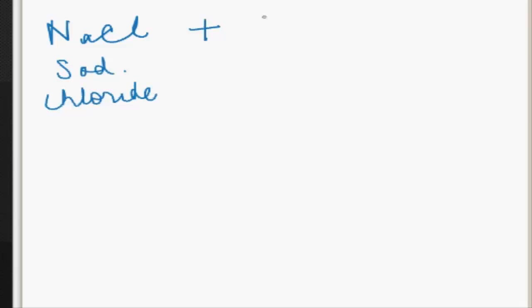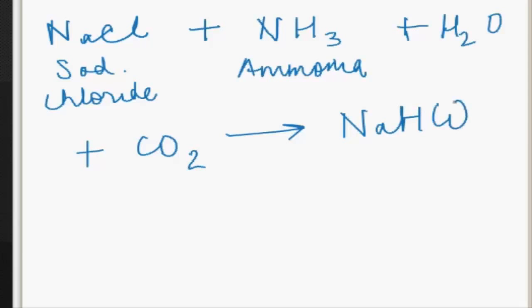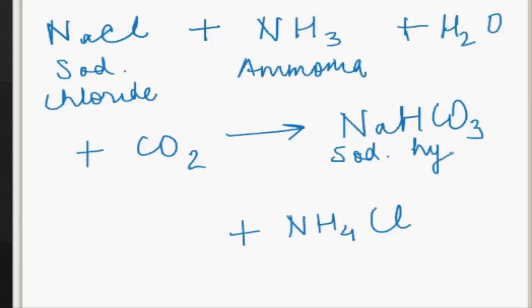Sodium chloride reacts with ammonia (NH3) along with water (H2O) and carbon dioxide (CO2). It will produce NaHCO3 and NH4Cl. This is baking soda or sodium hydrogen carbonate, and this is ammonium chloride.